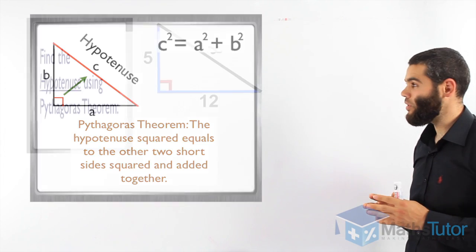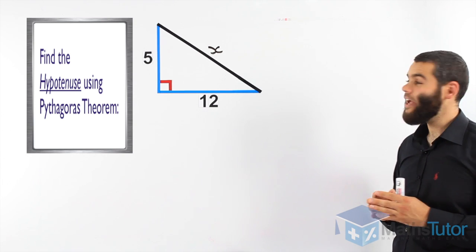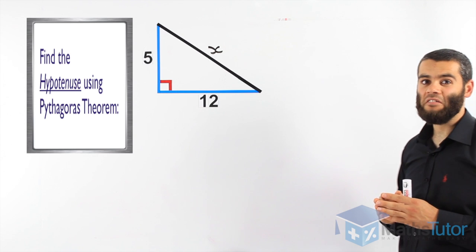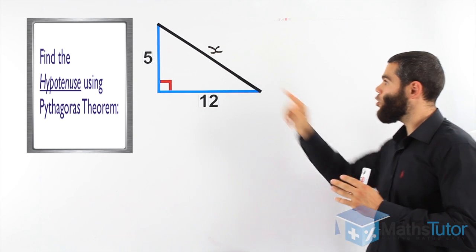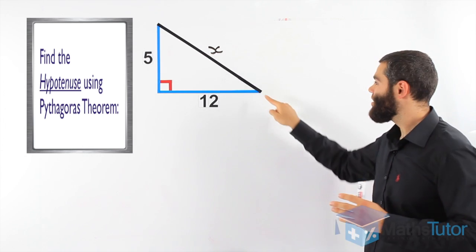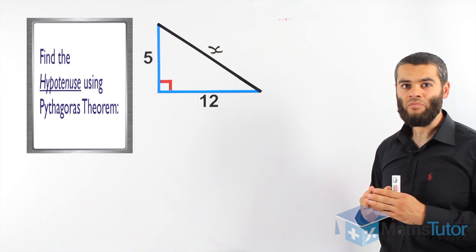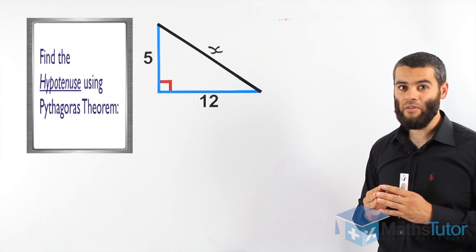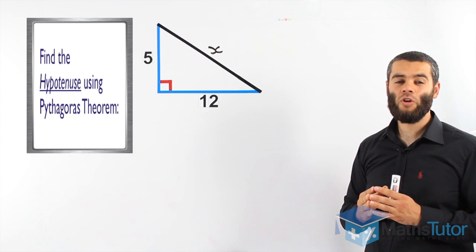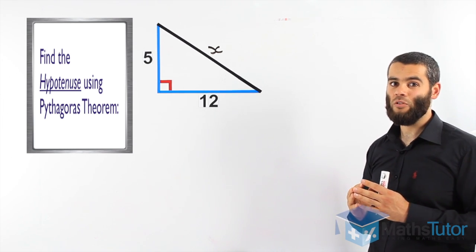Let us look at this example here. We have this right-angled triangle and we notice that the hypotenuse is missing and it's marked with an X. Now, the hypotenuse is always opposite the right angle. It is the longest side and here it's marked in black. So we can use Pythagoras' theorem to find the missing hypotenuse. We know it's a right-angled triangle. That means Pythagoras can work. Let's see how we're going to do that.